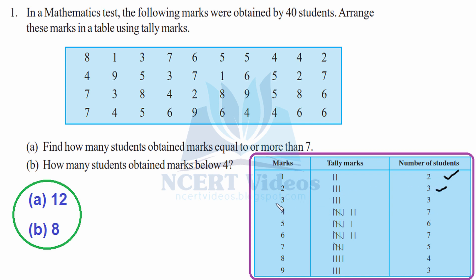For 3, we find it one time and mark it, then a second time, then a third — so 3 appears three times. For 4, we mark one time, second time, third time, then again a fourth time, and a fifth time.